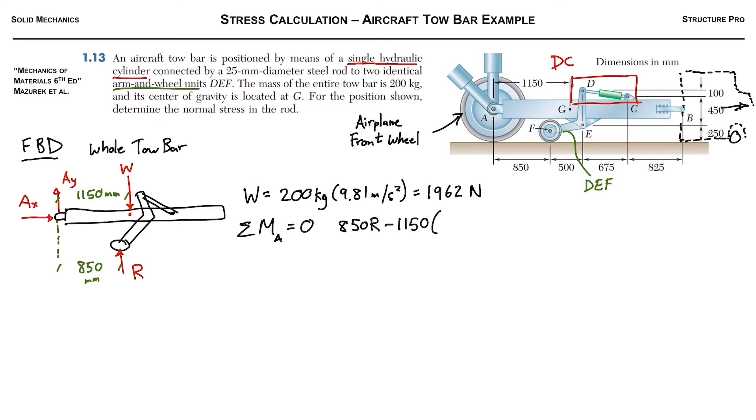Sum of all the moments got to be equal to zero because this thing is not rotating. So we got the 850R and then we're gonna subtract, because it's in the opposite sense, the 1150 times the weight that we calculated of 1962 newtons. And we can solve this quite easily: the reaction is 2655 newtons. So we'll highlight that, we'll need it later.